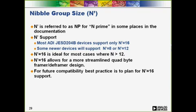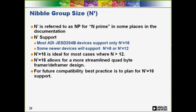The nibble group size is represented as both NP and N-prime in the JESD204B specification — they refer to the same thing. All ADI devices support N-prime equal to 16, with most supporting this mode exclusively. A couple of devices in development will also support N-prime of 12 or 8. For devices with bit rates above 6 Gbps we use a quad-byte architecture, so supporting N-prime values other than 16 can create design inefficiencies. We recommend that for your ASIC or FPGA development, an N-prime value of 16 should always be supported.